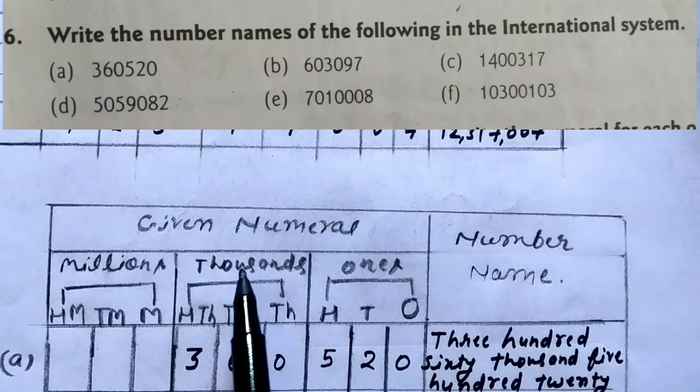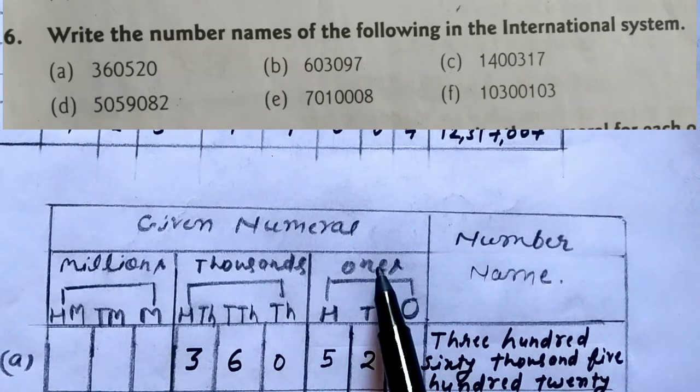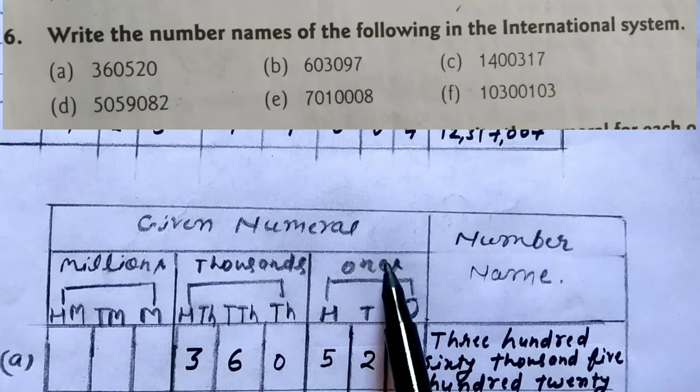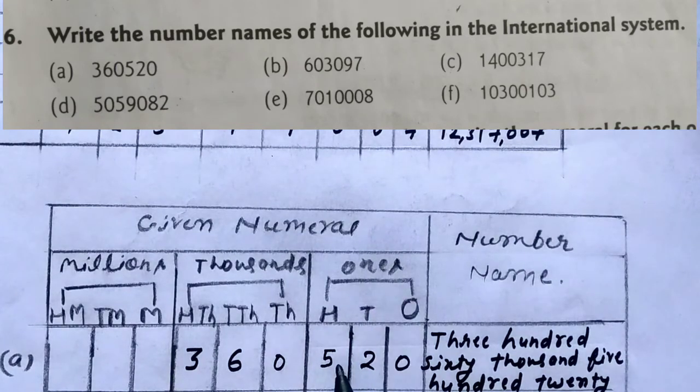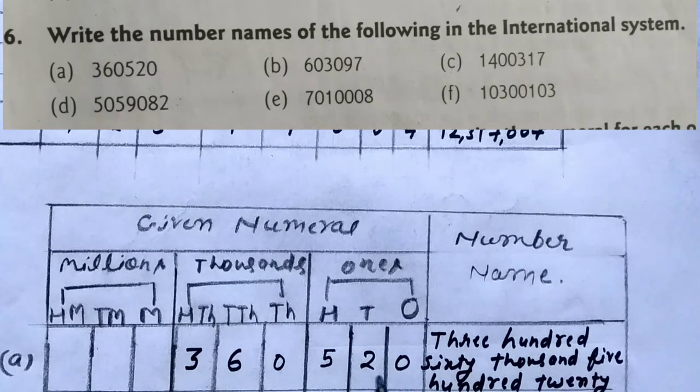So I will write 360. What is period? Thousand. So I will write thousand. And here 520. What is period once? In ones we do not write once. Just write the name that is given: 520. So this number is in words: three hundred sixty thousand, five hundred twenty.